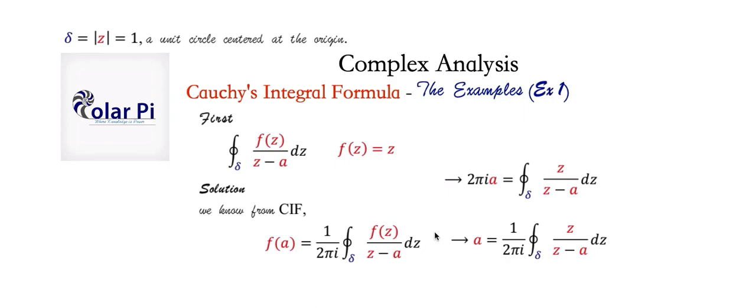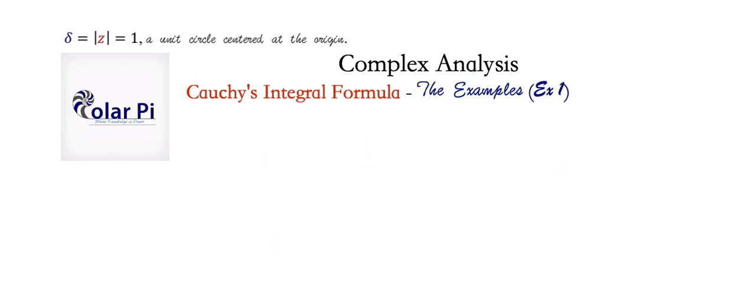Now, yes, this is not a specific number, but if you want a specific number, make a specific choice of A inside of delta, and then there you go. You'll have an actual constant as your answer if that's what you want, instead of a general answer 2 pi i A in terms of A. All right, so let's go to a second example.